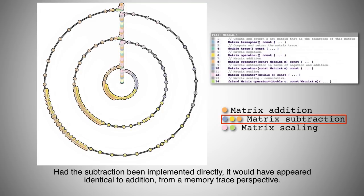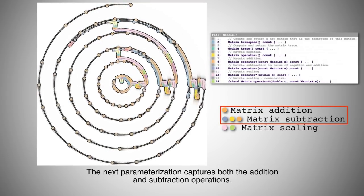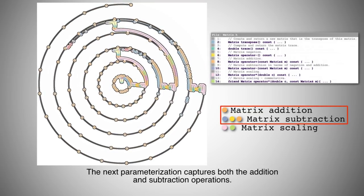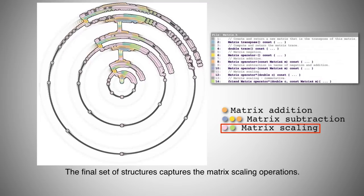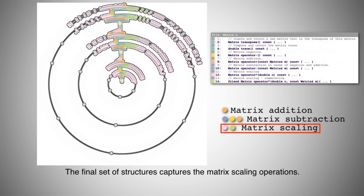Had the subtraction been implemented directly, it would have appeared identical to addition from a memory trace perspective. The next parameterization captures both the addition and subtraction operations. The final set of structures captures the matrix scaling operations.